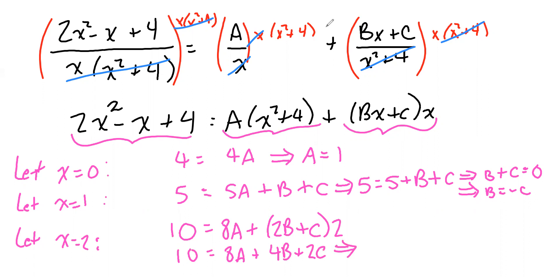We know A equals 1. So we can put that in right now and get 10 equals 8 plus... We know b equals negative c. So we can change the b to a negative c, get 4 times negative c plus 2 times c. And now we just have an equation involving only c's.